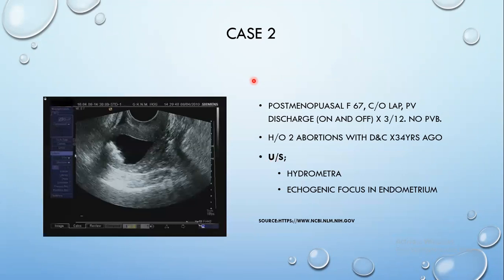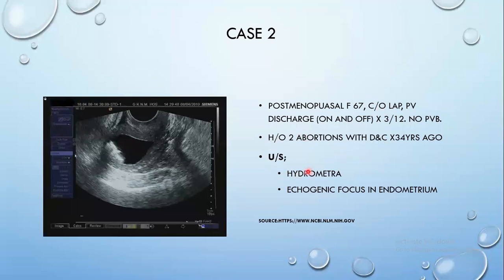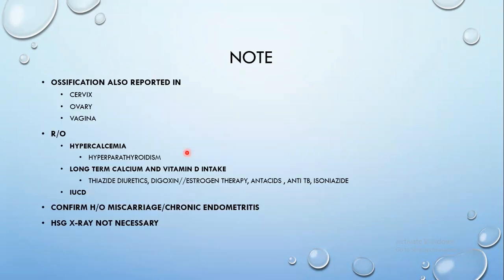This is another case from the internet that caught my eye — a postmenopausal 67-year-old female who reported with lower abdominal pain and vaginal discharge on and off for about three months. She had a history of two abortions with DNC 34 years prior to this presentation. On ultrasound there was a hydrometra and an echogenic focus within the endometrium, and a diagnosis of osseous endometrial metaplasia was made.